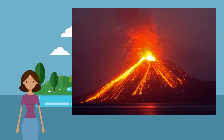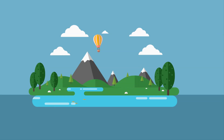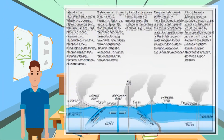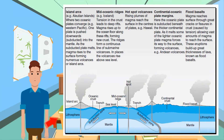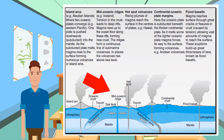Magma can also bubble up to the Earth's surface through fissures or cracks, which eventually forms lava plateaus. Weaknesses in the Earth's crust can be subclassified as follows. Island arcs — for example, the Aleutian Islands — occur where two oceanic plates converge; one plate is pushed downwards and subducted into the mantle, and as it melts, magma rises to the surface forming numerous volcanoes or island arcs. Mid-oceanic ridges — for example, Iceland — form where tension in the crust leads to deep rifts; magma rises up to the ocean floor along these rifts forming new crust, creating a continuous line of submarine volcanoes. In places the volcanoes rise above sea level.